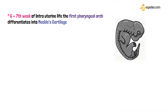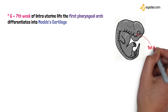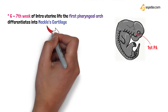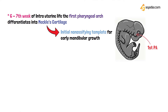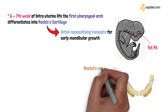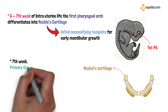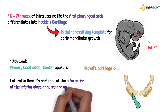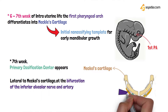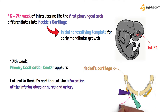Between the sixth and seventh week of intrauterine life, the first pharyngeal arch forms and differentiates into Meckel's cartilage. Meckel's cartilage is a non-ossifying template for the early growth of the mandible — it acts as a mold and degenerates later on. Around the seventh week, a primary ossification center appears, lateral to Meckel's cartilage, at the bifurcation of the inferior alveolar nerve — the point where it divides into the mental nerve and the incisive nerve.